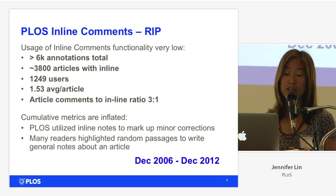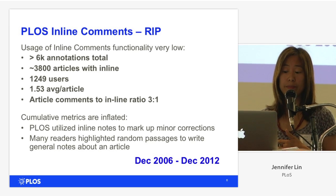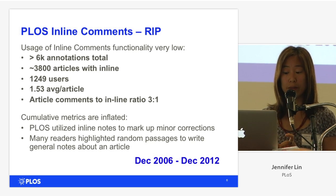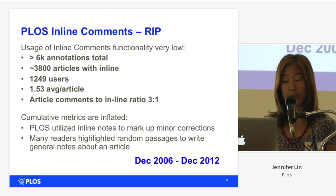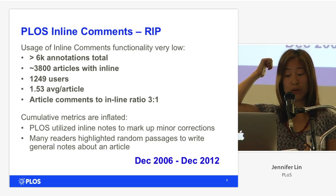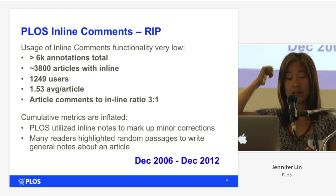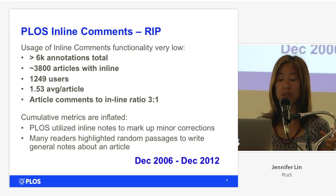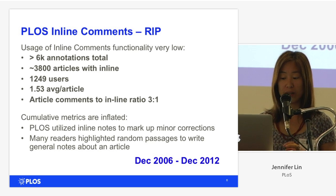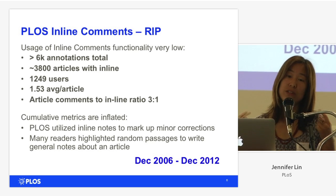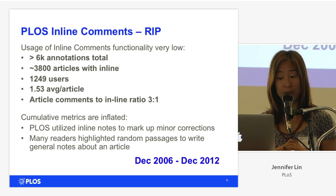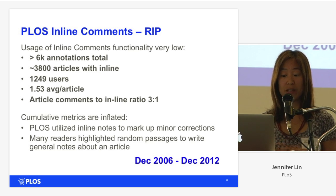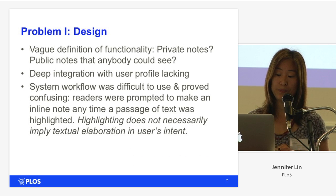The ratio between general comments at the end of the article to inline comments was three to one. Even these numbers are inflated, because the way we used to mark up minor corrections was to display them as an inline note. On top of that, many readers highlighted random passages in order to write general notes about an article.